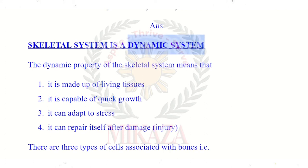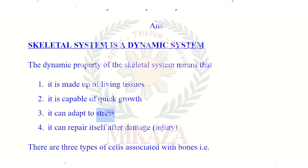The dynamic property means the skeleton is made of living tissue, it can grow quite fast, and it can adapt to stress — meaning the more stress you put on bones, the stronger they become. If less stress is applied, bones become comparatively weaker. It can repair itself after damage, like fractures. These four qualities are the basis on which we say the skeletal system is a dynamic system.